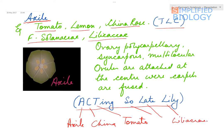In axile placentation, the ovary is polycarpillary — meaning there are many carpels — and syncarpous, meaning the carpels are united. It is multilocular, meaning many cavities are present, as seen in the diagram. The ovules are attached at the centre where the carpels are fused.